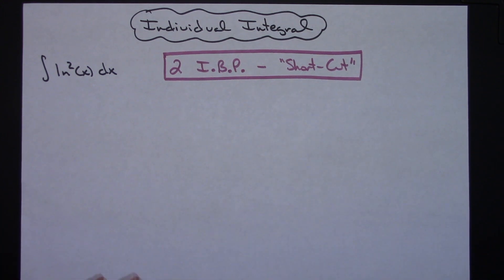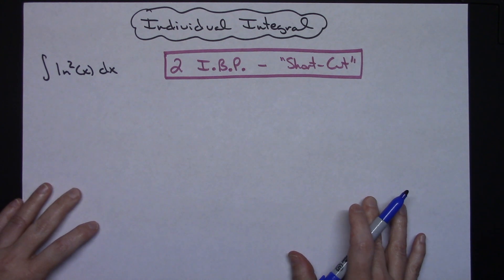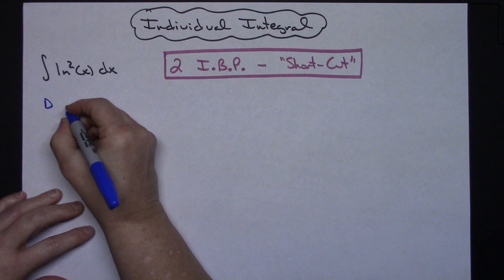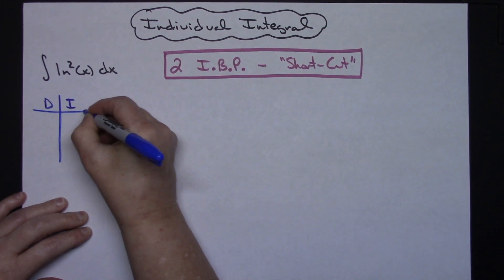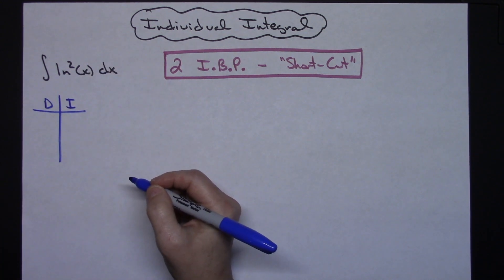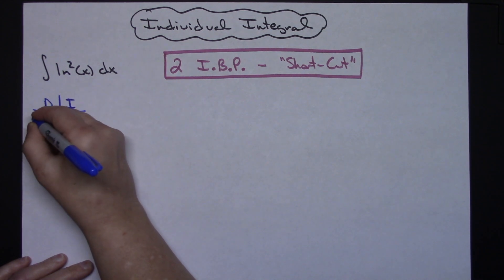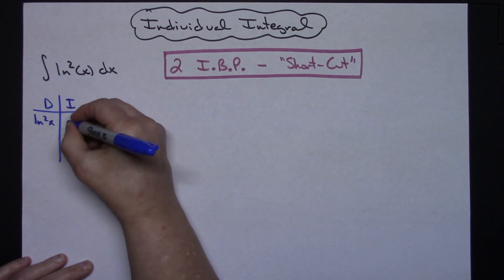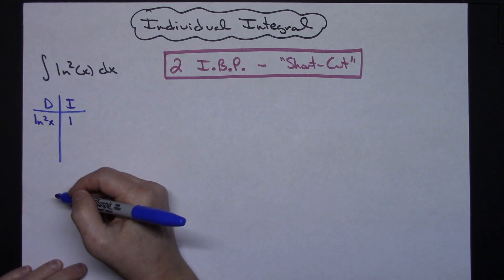I'm going to assume that you've watched some of my other videos and you are used to this shortcut. So I'm going to start right here and I know I need to do integration by parts, so I'll use my shortcut. I'm going to create a column for my derivative and a column for my integral. Because of what this is, I'm going to choose to put natural log of x quantity squared under the derivative column, and that leaves me with just a 1 in my integral column.